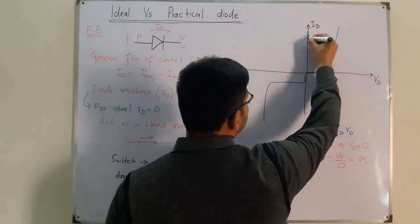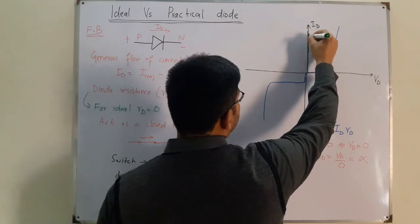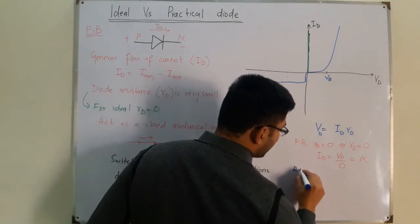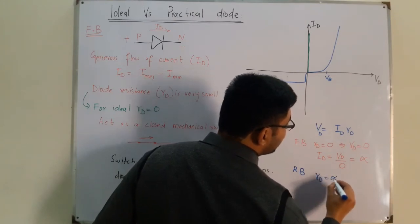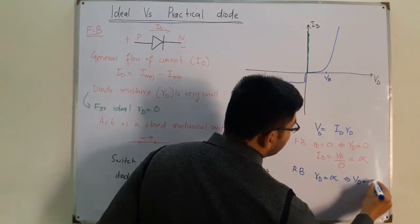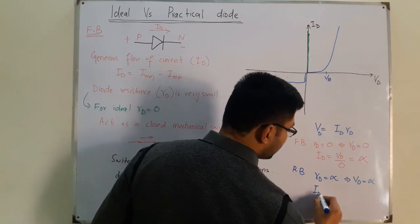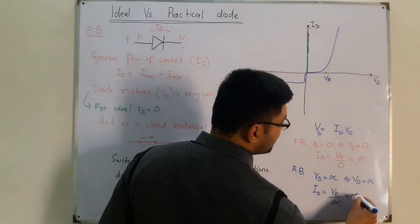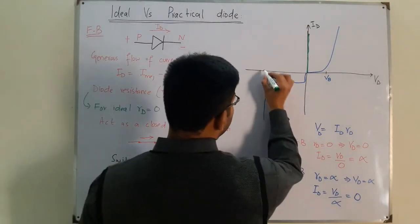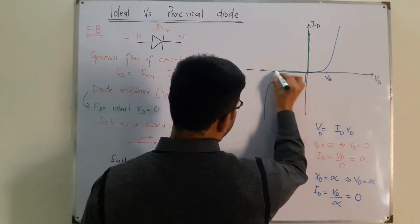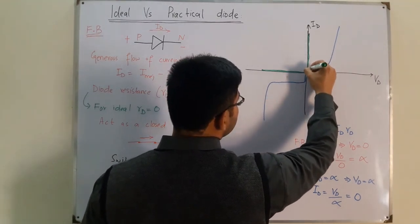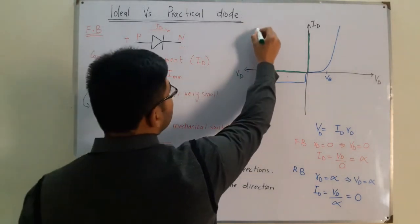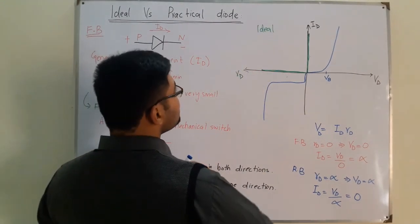For the ideal diode in reverse bias, Rd is infinite, meaning the voltage extends toward the negative horizontal axis and the current ID equals VD divided by infinity, which equals zero. So this portion lies on the horizontal axis. The green color represents the ideal diode and the blue color represents the practical diode.